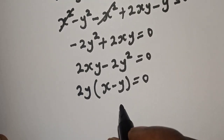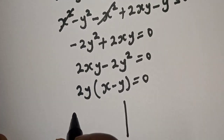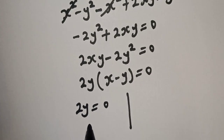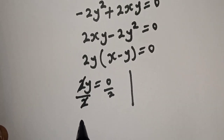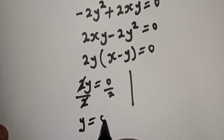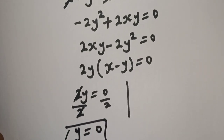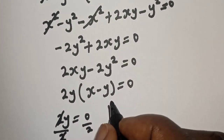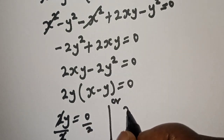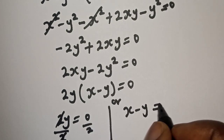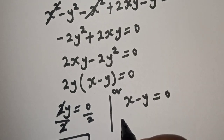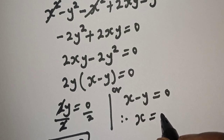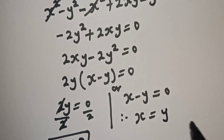There are two cases here. The first case is 2y equals 0. Dividing both sides by 2, y is equal to 0. From the second case, x minus y equals 0, which means x is equal to y.